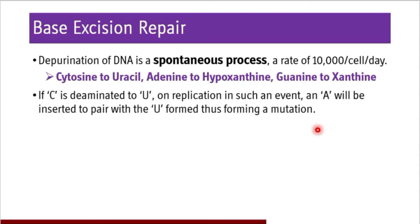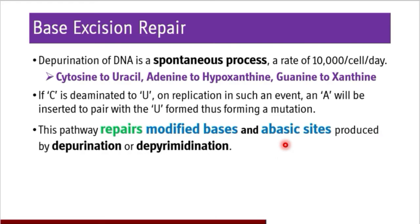If cytosine is deaminated to uracil, adenine will be inserted to pair with U, because uracil is not normally present in DNA. If cytosine is deaminated to uracil, by the rule of complementarity, adenine will be inserted to pair with the newly formed uracil, thus leading to a mutation. This pathway repairs modified bases or AP (abasic) sites produced by depurination or depyrimidination. Those modified bases — cytosine to uracil, adenine to hypoxanthine, guanine to xanthine — will be repaired by base excision repair, which is the exclusive repair mechanism for modified bases or abasic sites.